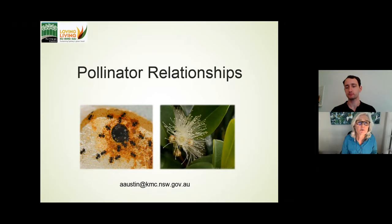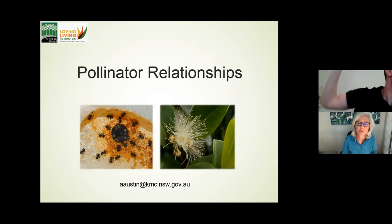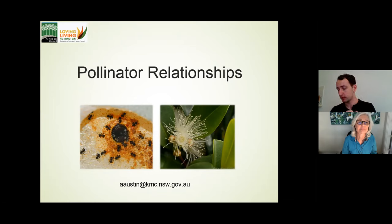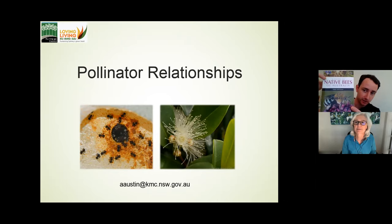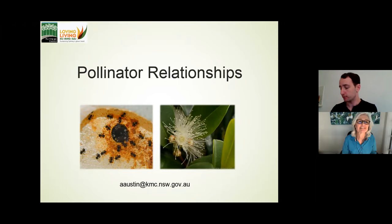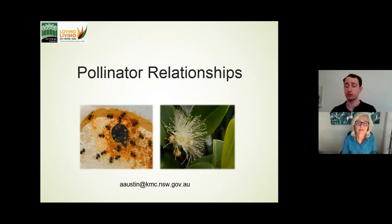A question about a good field guide for insects: from the bee perspective, the best one is 'A Guide to Native Bees of Australia' by Terry Houston. You can find it on Amazon or through CSIRO. Terry Houston is one of the godfathers of bee biology here in Australia — the book covers identification in the field as well as life cycles, evolution, and other aspects of bee biology. For wasps and flies, anything published by CSIRO is worth its weight in gold.